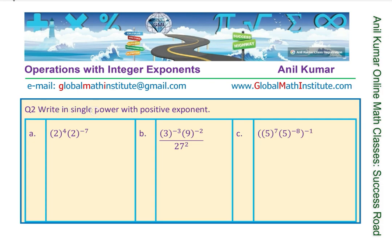The second question is to write in single power with positive exponents. Answers should always be provided with positive exponents. So we apply the rules: same base, powers are 4 and minus 7, so they get added. We have 2 to the power of 4 plus minus 7, which gives you 2 to the power of minus 3. You have to write this as a positive exponent, therefore the answer should be 2 cubed in the denominator — written as 1 over 2 to the power of 3. The whole idea is to write as a single power.